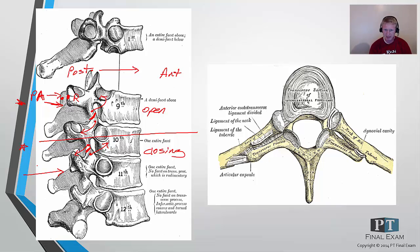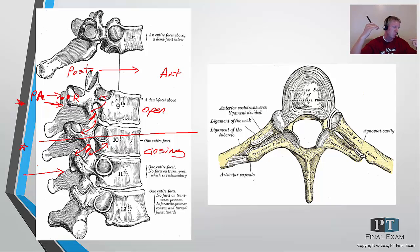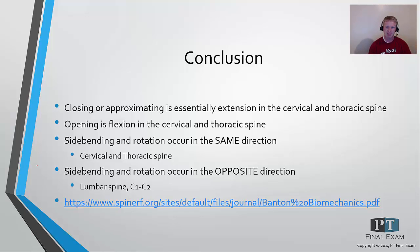Side bending and rotation occur in the same direction in the c-spine and t-spine. If you have an issue turning left — turning left and side bending left occur in the same plane — you have two options: help with the closing on the left or help with the opening on the right. With opening you mobilize the superior vertebra; with closing you mobilize the inferior vertebra. Closing and approximation are essentially extension in the cervical and thoracic spine.